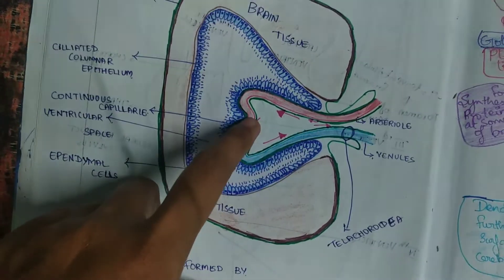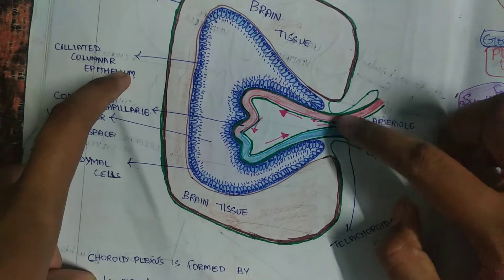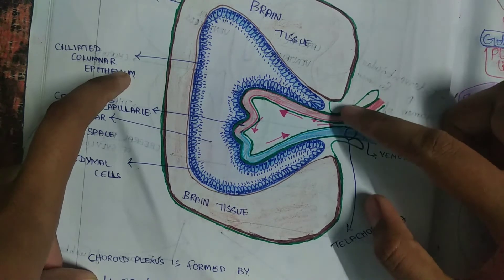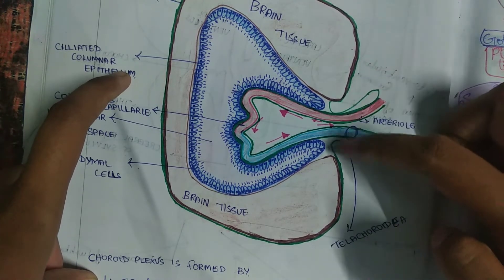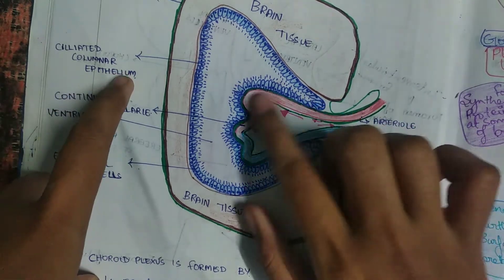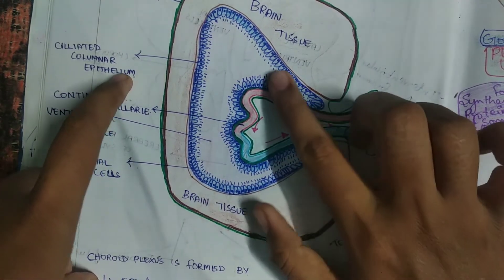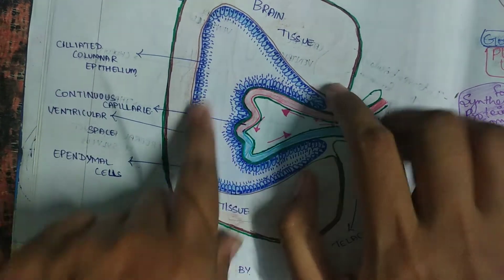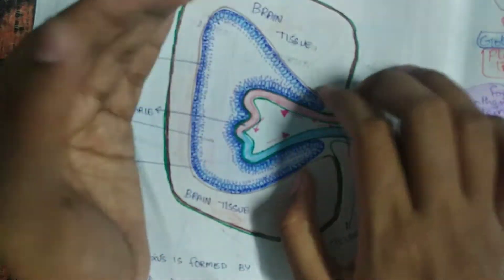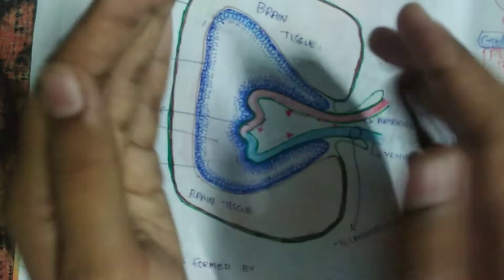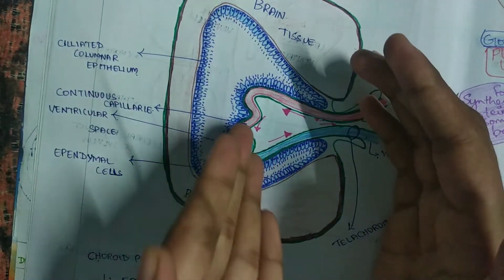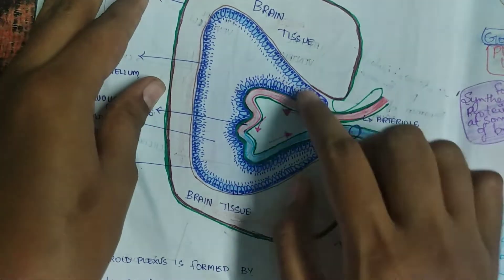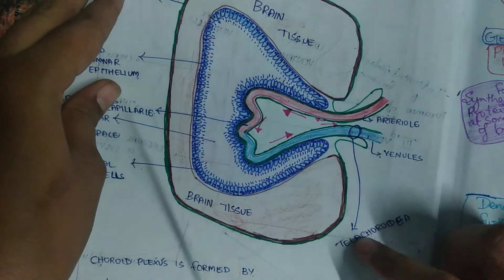The structure of choroid plexus is having pia mater and blood vessel. Pia mater along with blood vessels is called tela choroidea. So this is the structure of choroid plexus having ependymal cells — the glial cell of the brain — blood vessels, and pia mater. This choroid plexus is nothing but a tuft of capillaries present inside the ventricle of the brain, and it is involved in the secretion of cerebrospinal fluid, CSF, which circulates in the subarachnoid space in the brain.